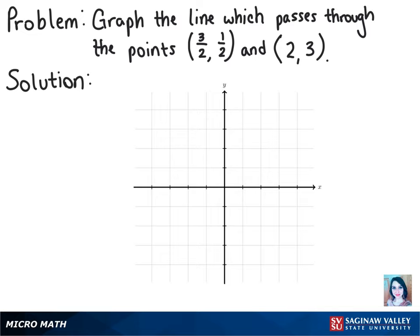So let's start with 3 halves, 1 half. So on the x-axis, we'll move over 1 and 1 half. And then we'll go up 1 half.